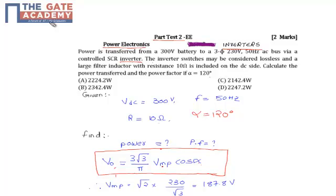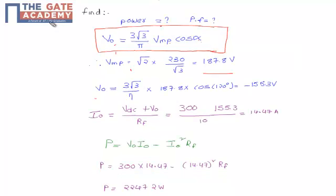We need to find VmP, which is √2 times the voltage of the AC side, which is 230/√3. After calculating this, we get 187.8 volts.